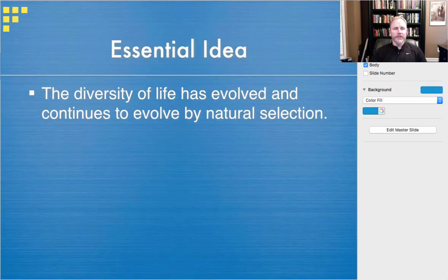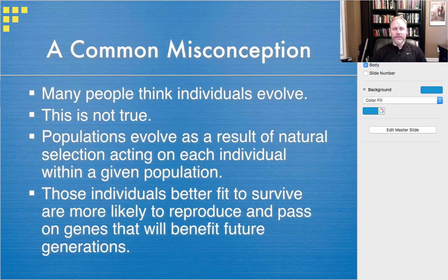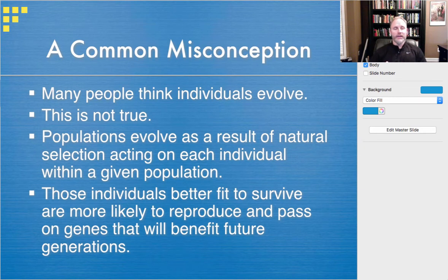The essential idea is that the diversity of life has evolved and continues to evolve by natural selection — the interaction of organisms with their environment. One common misconception is the notion of individuals evolving, which is simply not true. Individual organisms themselves don't evolve. They're given the genes they received during mating, and whether that combination of genes is good or bad is determined by how the organism interacts with its environment and how many offspring it's able to produce.